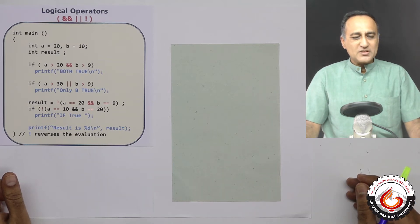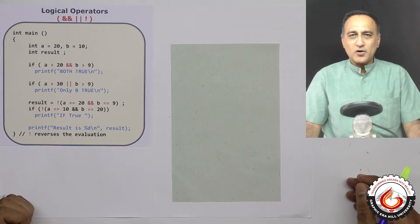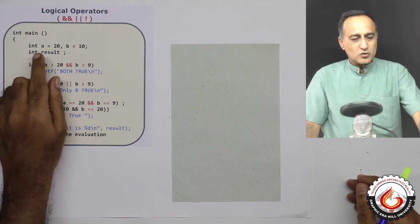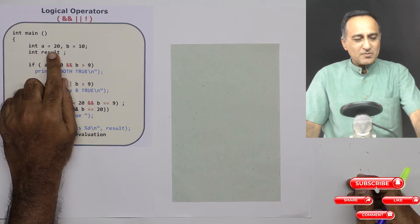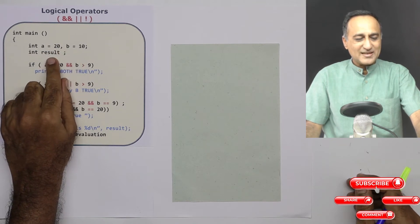So what we'll do is we will try to understand these three logical operators and, or, and not using some simple code examples. So what I have done is I have declared an integer variable A is 20, B is 10, and I've declared the third variable called result.